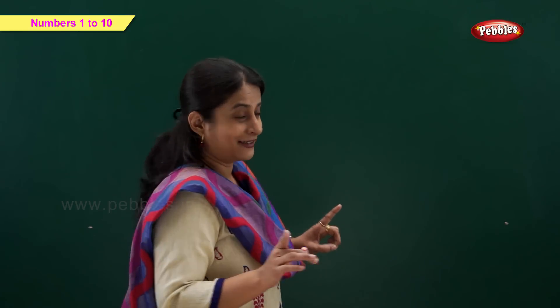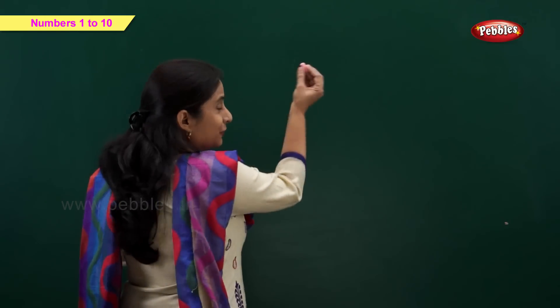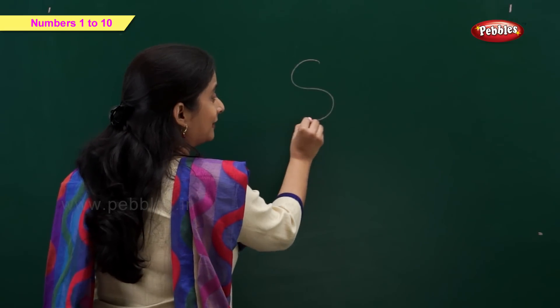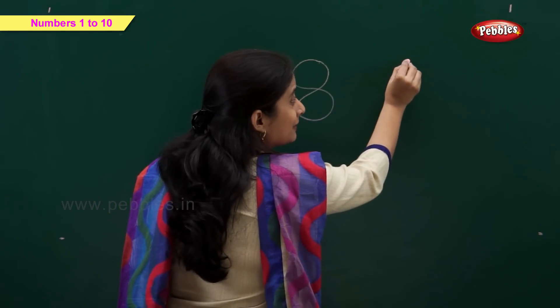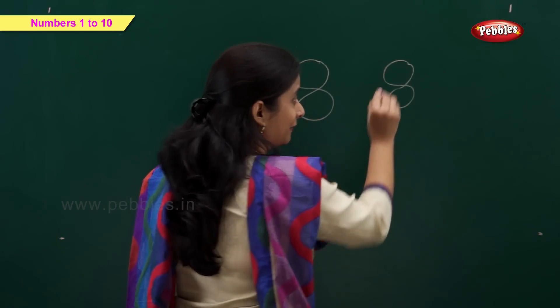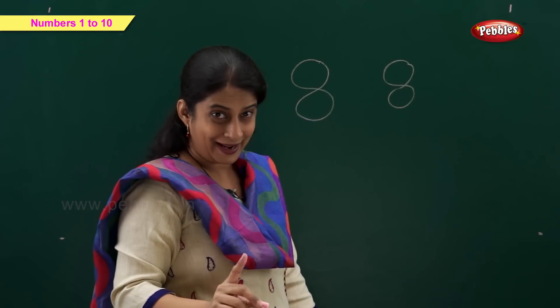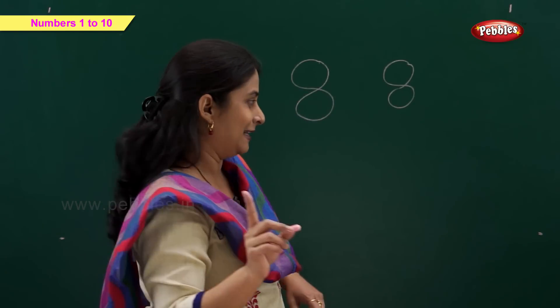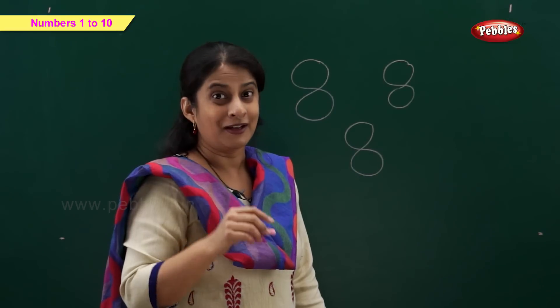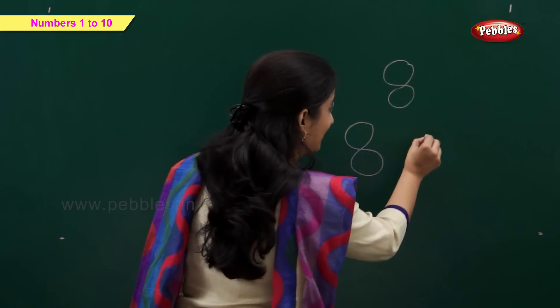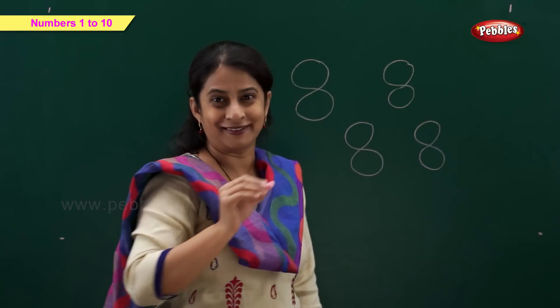Okay friends, so far we have learned up till number 7. And now it's time to write number 8. Let's start — it's very simple to write. You just have to draw a curve joining another curve. It also looks like an S joining another curve — that makes number 8.